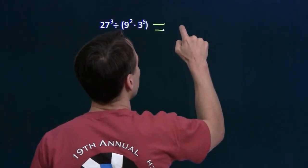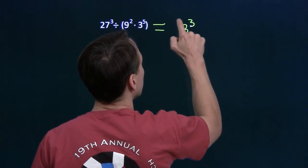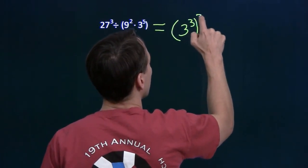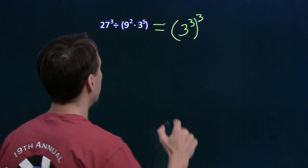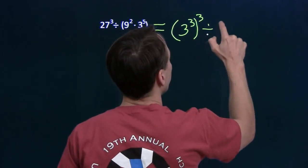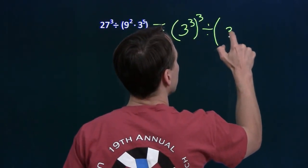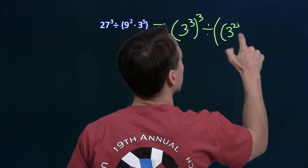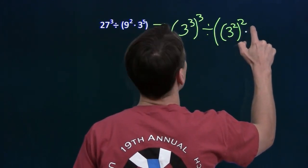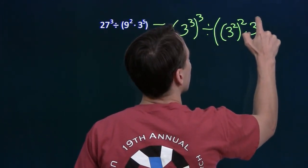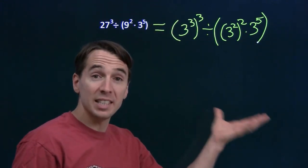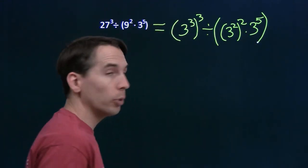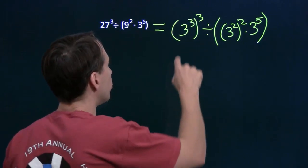So I'll start by writing 27 is 3 cubed. So 27 cubed becomes just the cube of 3 cubed. And I'm going to do the same thing over here with the 9. 9 is just 3 squared. And now all the powers have the same base, and I can use the exponent rules I already know. I don't need to make up new rules.